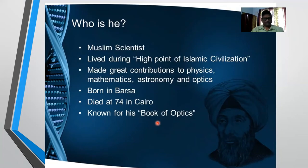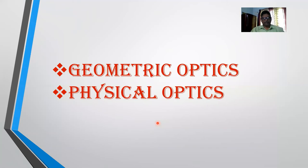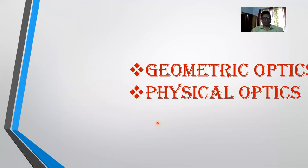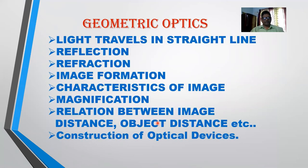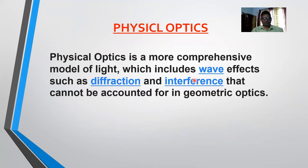Optics has mainly two branches: geometric optics and physical optics. Geometric optics covers what we know about light — that it travels in a straight line, has the properties of reflection and refraction, how images are formed, magnification, the relation between image and object distance, and the construction of optical devices. Physical optics is a higher-level topic dealing with the wave nature of light — diffraction, interference — which you will learn in higher classes. We shall confine our study to geometric optics.